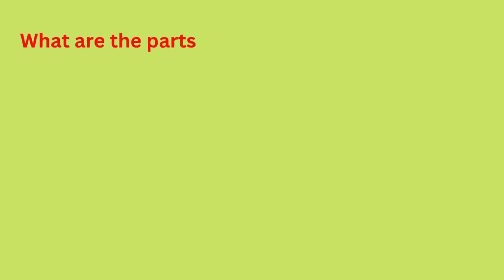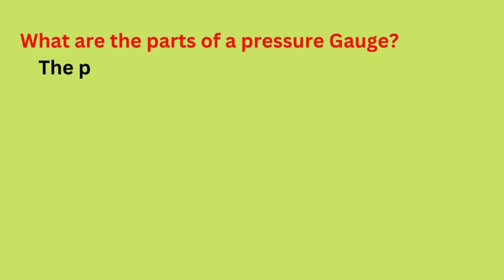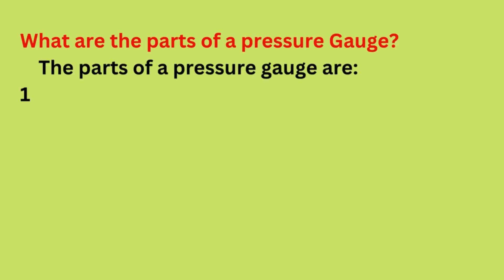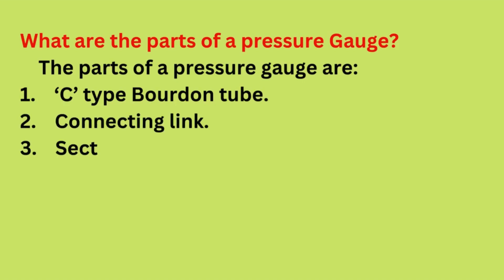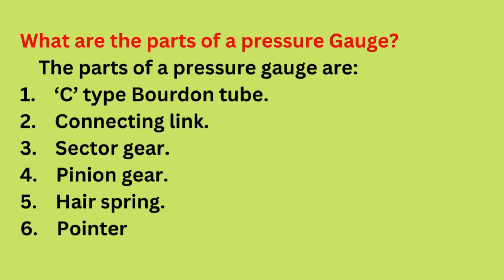What are the parts of a pressure gauge? The parts of a pressure gauge are: 1. C-type Bourdon tube, 2. Connecting link, 3. Sector gear, 4. Pinion gear, 5. Hairspring, 6. Pointer, 7. Dial.